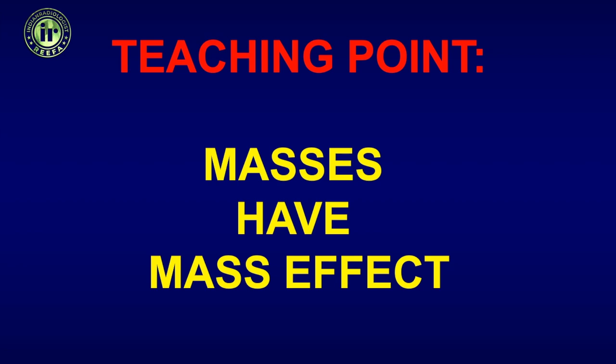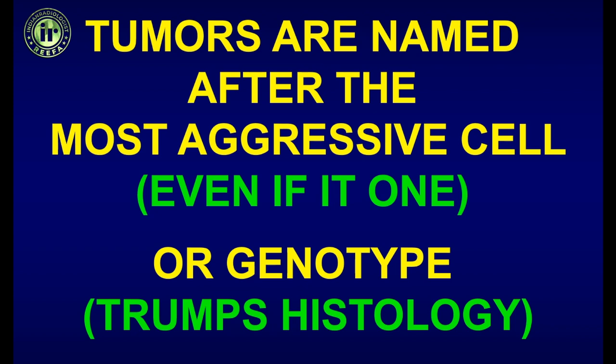The most important point: all masses have mass effect, and this is what kills the patient quickly. If you see a lesion without mass effect, chances are it is not likely a neoplasm — it is more likely gliosis or some old pathology giving an artifactual appearance of a neoplasm. Also remember that tumors may not be what we see on imaging; they might turn out to be something completely different because they are histologically named after the most aggressive cell line, and even if they have a completely different histology, if the genotype is different, they will be named after that cell type.